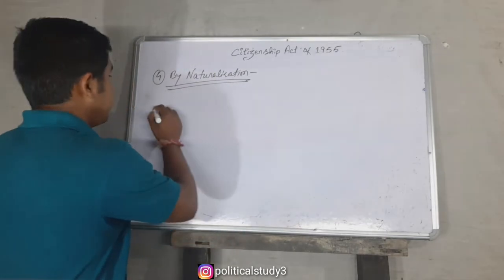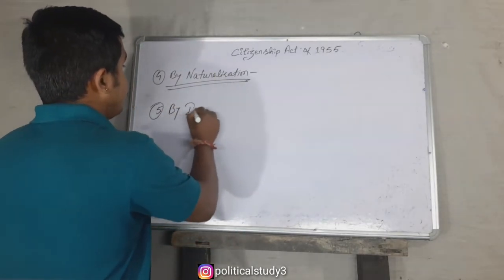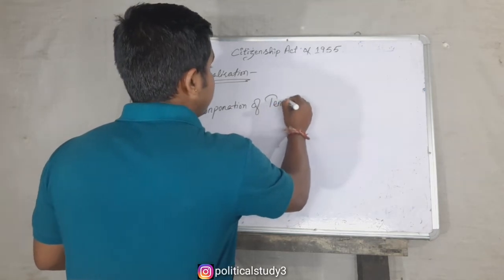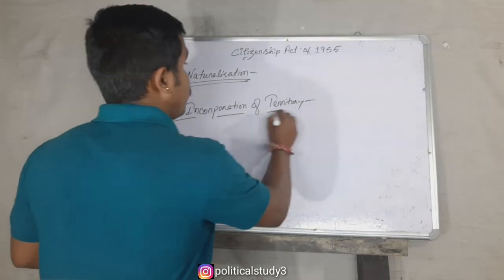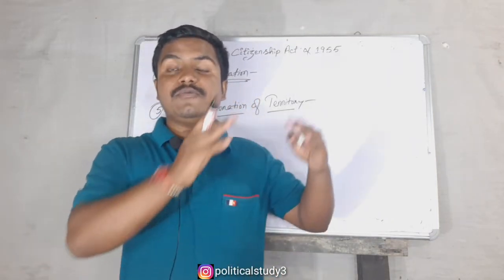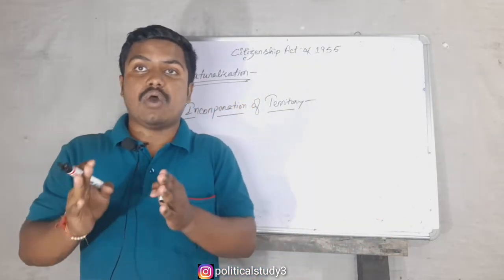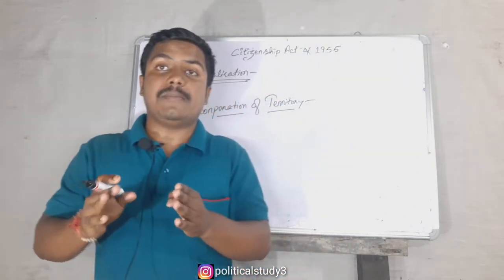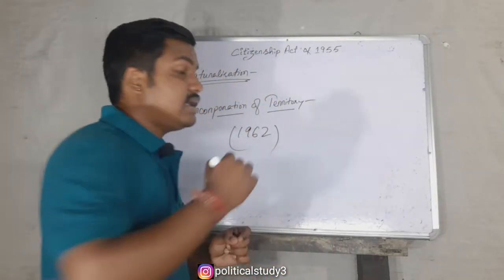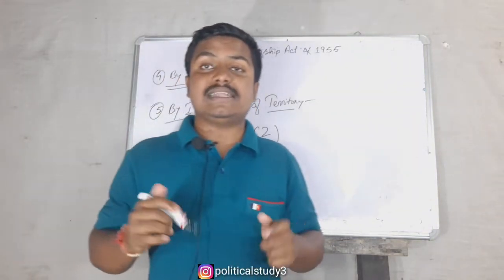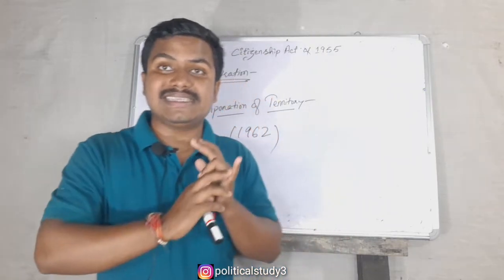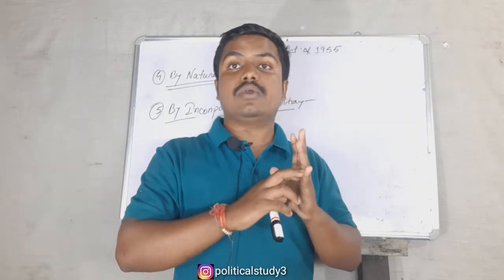Our fifth topic is by incorporation of territory. Incorporation of territory means if any foreign territory becomes a part of India, then the people of that territory automatically become citizens of India. For example, when Puducherry became a part of India, the Government of India issued the Citizenship Order 1962 under the Citizenship Act of 1955.